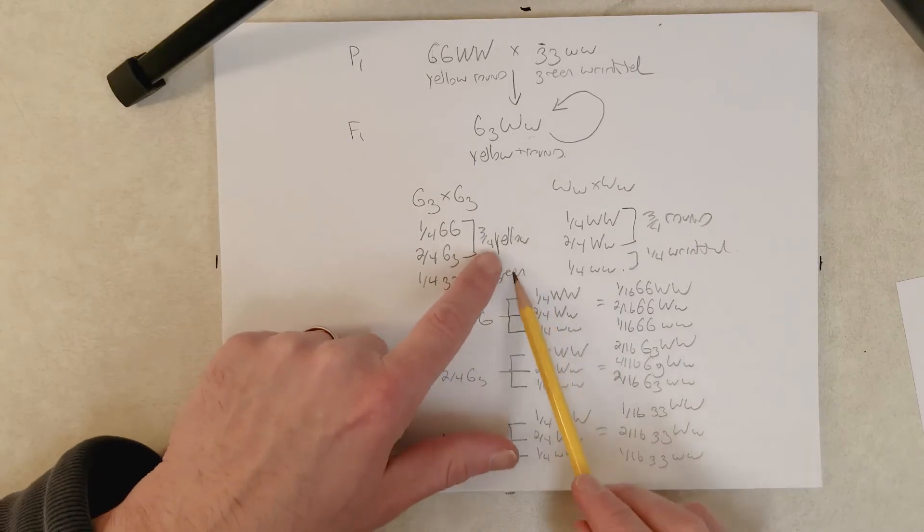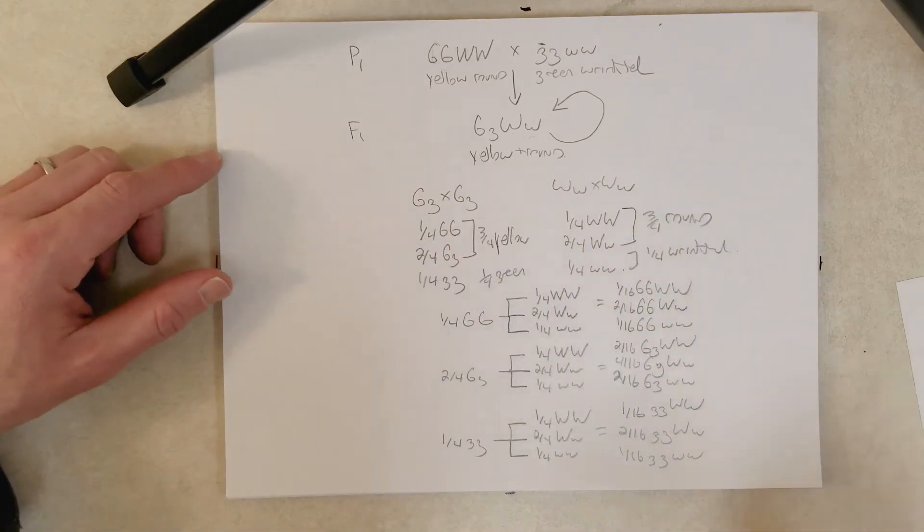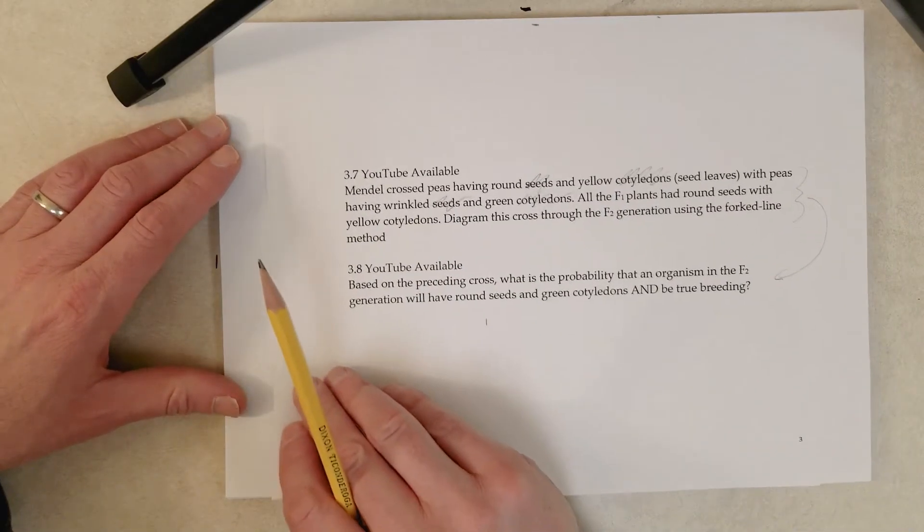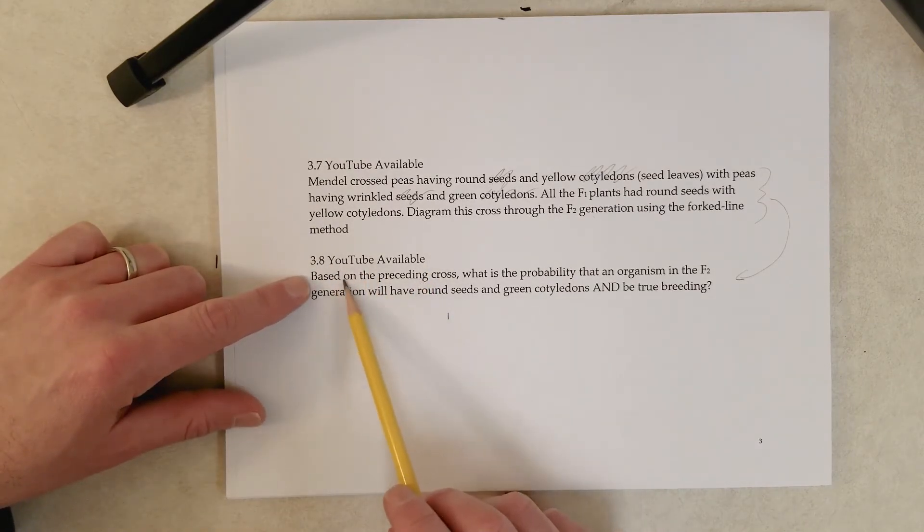So okay, we would still need to combine these to get the F2 phenotypic ratio of 9 to 3 to 3 to 1, and I did that in a previous video. But to answer this question right here, we just need the genotypic ratio.